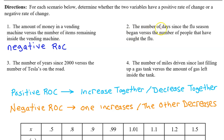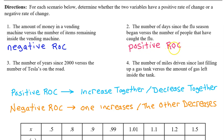Number two: the number of days since flu season began versus the number of people that have caught the flu. These two quantities will have a positive rate of change because as the number of days into flu season increases, the number of people that have caught the flu also increases.